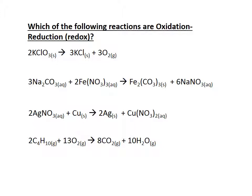For potassium chlorate decomposing: potassium gets a plus one charge right away, but chlorine and oxygen are together so oxygen gets minus two, which leaves chlorine with a plus five charge. On the product side, potassium chloride is a binary compound so we read charges off the periodic table, and oxygen as a free element is zero. Potassium's charge doesn't change, but chlorine goes from plus five to minus one — it gains six electrons, so chlorine is being reduced. Oxygen goes from minus two to zero, meaning it's losing electrons and being oxidized.